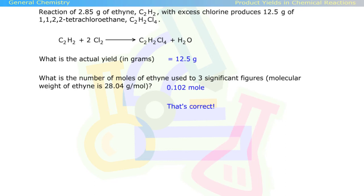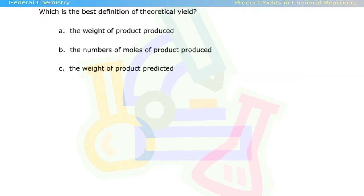Here's another question. Which is the best definition of theoretical yield? A, the weight of product produced? B, the numbers of moles of product produced? Or C, the weight of product predicted?